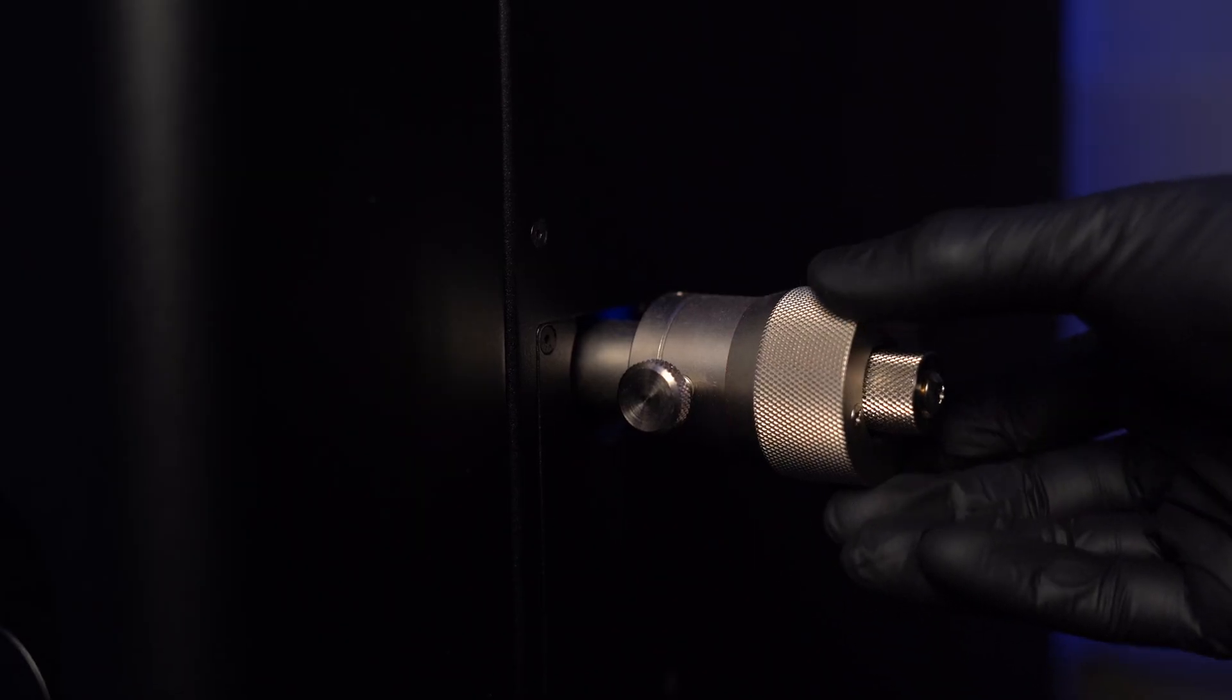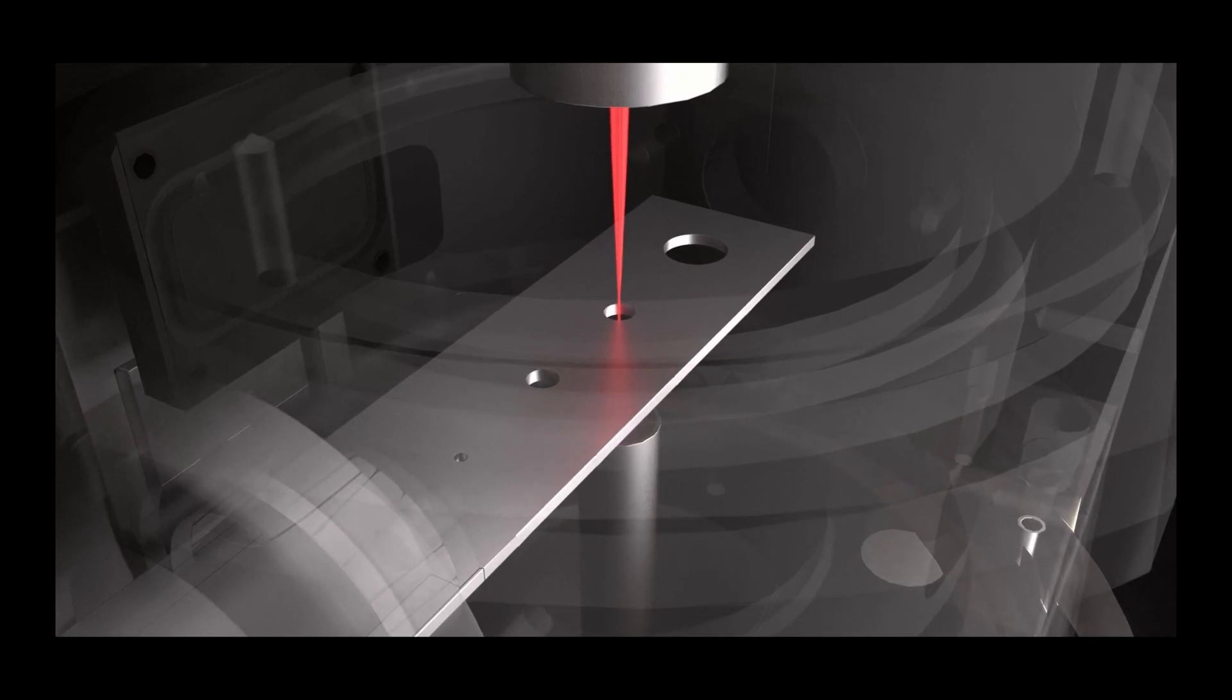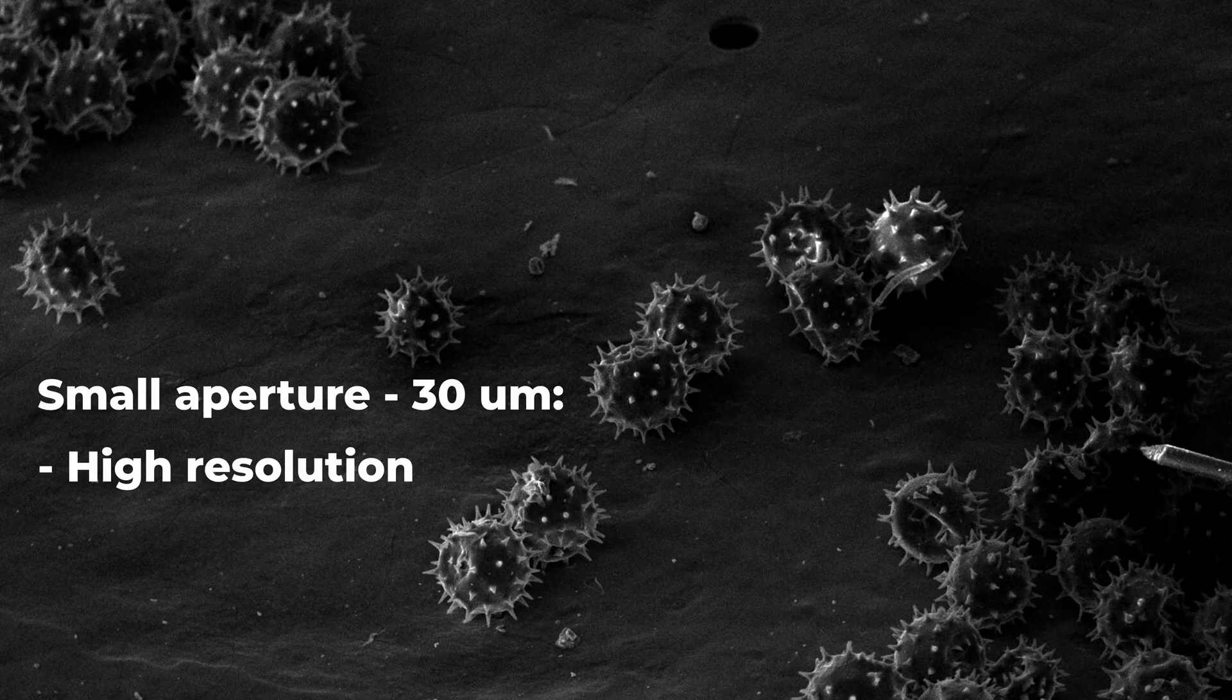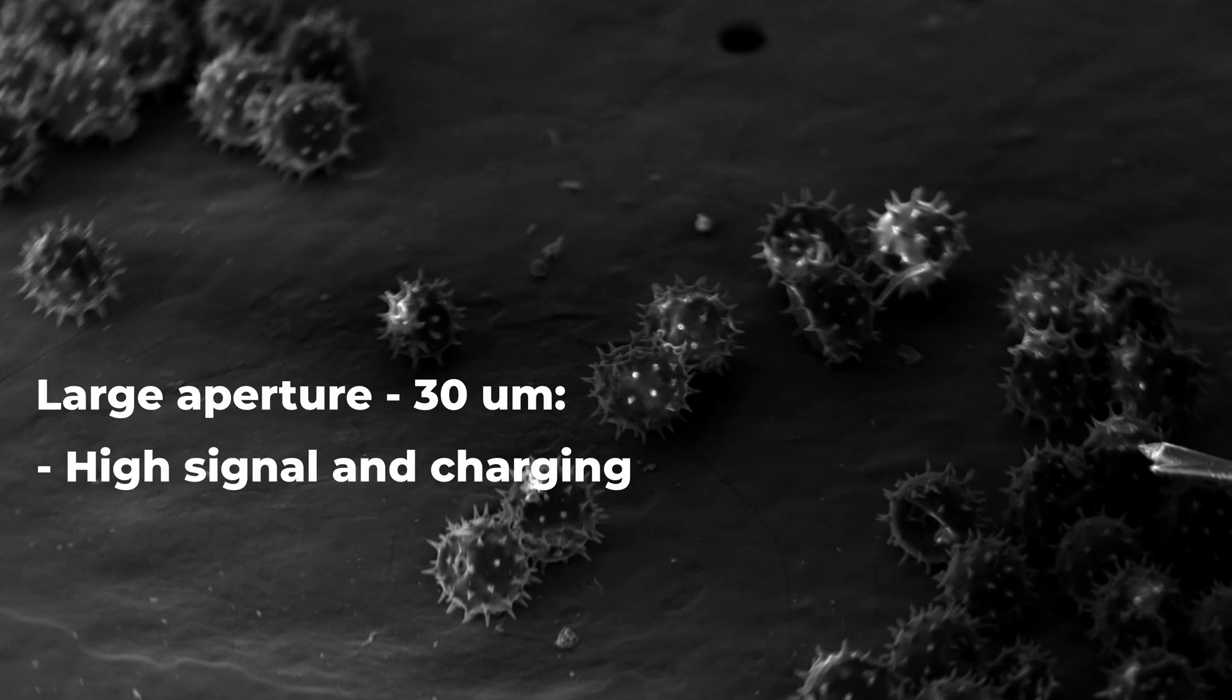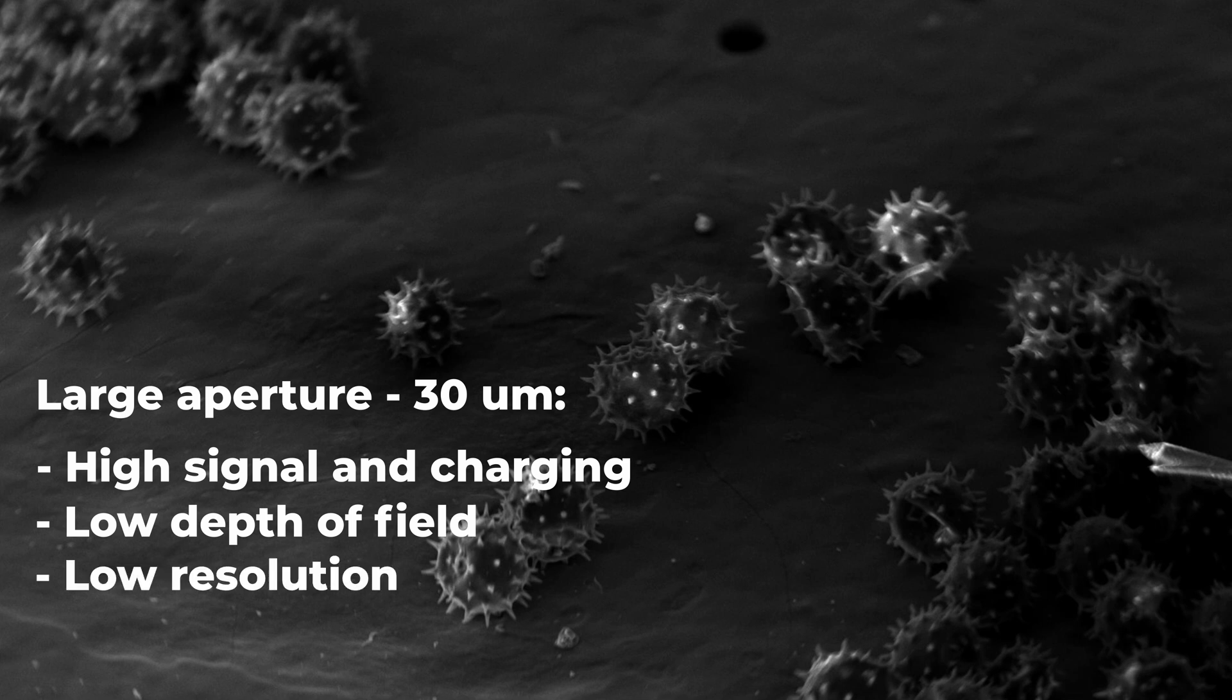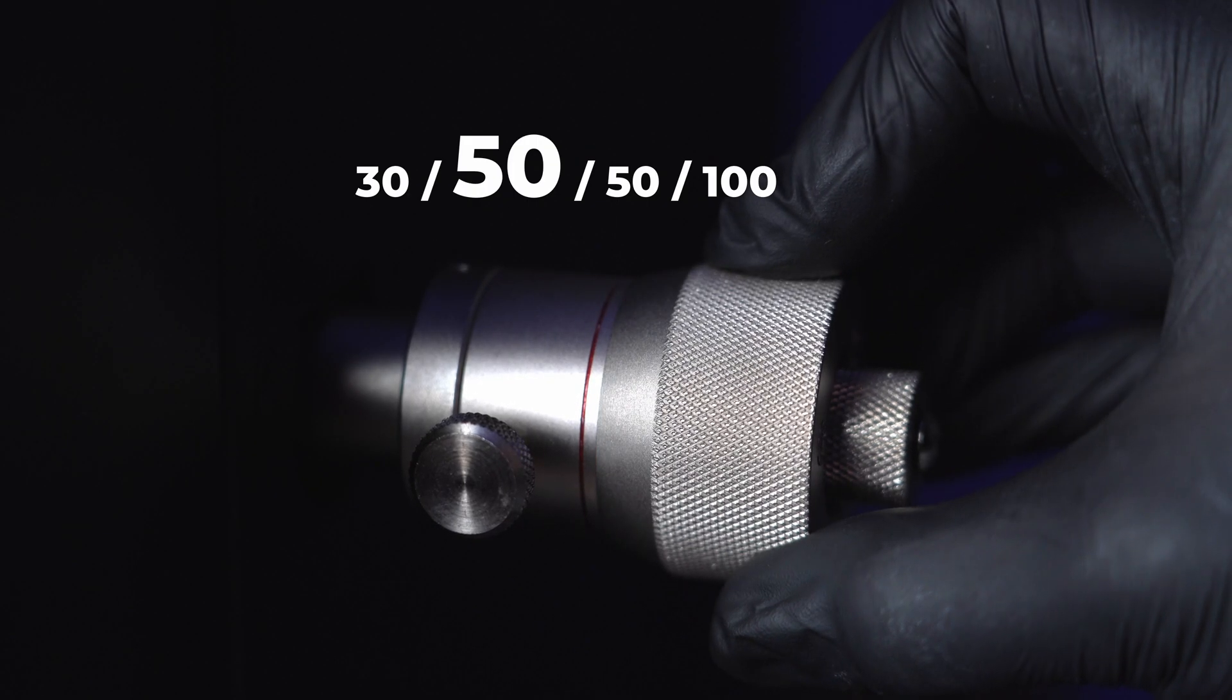On the right side there is an aperture knob with different apertures. We can control beam convergence angle and beam diameter. Small aperture, higher resolution, greater depth of field but lower signal because you're cutting off part of the electron beam. Large aperture, high signal but less depth of field and lower resolution. The mid-range of 50 microns is a great starting point.